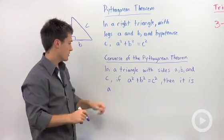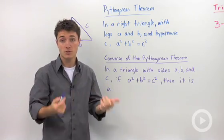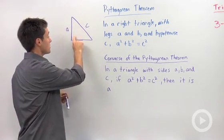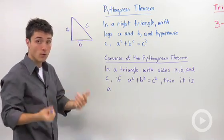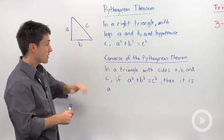But what about the converse of the Pythagorean Theorem? Remember, a converse switches the if and then parts of a conjecture. So what if we didn't know this was a right angle? What if I told you that A squared plus B squared equals C squared?